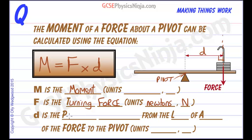D is the perpendicular distance. So there we are, the perpendicular 90 degrees distance from the line of action.